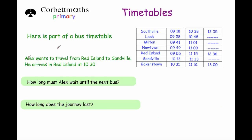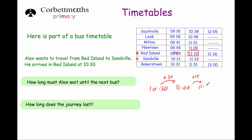The next part says Alex wants to travel from Red Island to Sandville — two stops next to each other. He arrives at Red Island at half past 10, so he won't be able to catch the 9.55 bus because that's before he arrived. He could catch the 11.15 bus or the 12.36 bus. The question asks how long must Alex wait until the next bus. The next bus he can catch at Red Island is at 11.15. From half past 10, waiting 30 minutes brings us to 11 o'clock, and then another 15 minutes to 11.15 — so altogether that's 45 minutes.